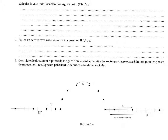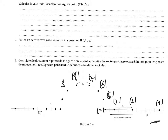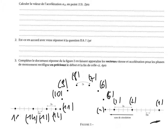Question 1. On nous demande de numéroter les points dans l'ordre chronologique. Je rappelle que le sens de circulation est donné ici. Donc le premier point est là, le dernier est ici. Donc 1, 2, 3, 4, 5, 6, 7, 8, 9, 10, 11, 12, 13, 14, et 15. Donc en fait on a 15 points d'enregistrement.